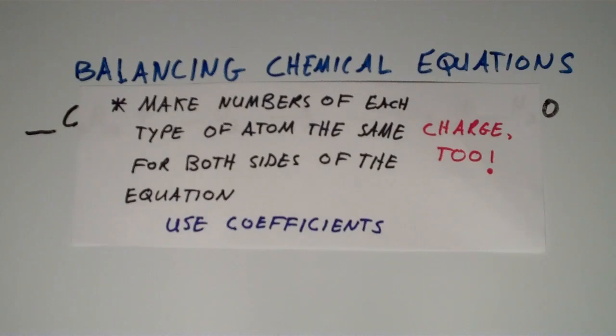So the idea with balancing chemical equations is we want to make the numbers of each type of atom the same for both sides of the equation. And the way that we do this is by assigning coefficients.